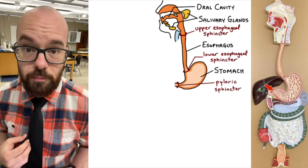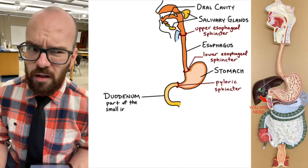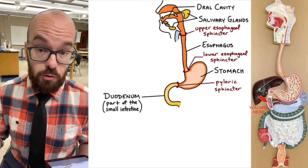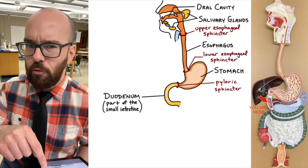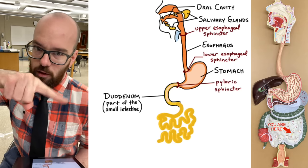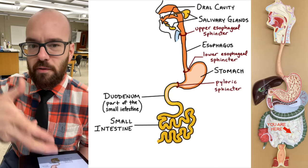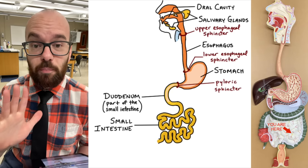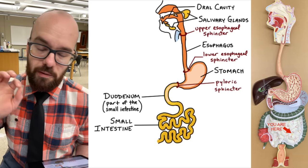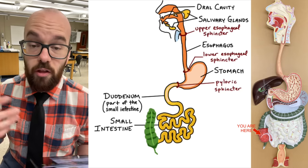When the pyloric sphincter relaxes and opens, food passes from the stomach into the first part of the small intestine, called the duodenum. A lot more digestion happens in the duodenum — we'll come back to that once we've seen other organs. The rest of the small intestine wraps around in a bunch of squiggles. The reason for this is to maximize the time food spends there, because we're absorbing nutrients out of the small intestine into the bloodstream. We want plenty of opportunity to absorb every nutrient from our food.